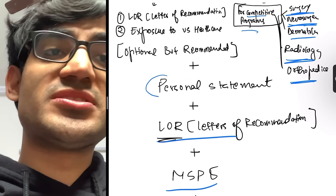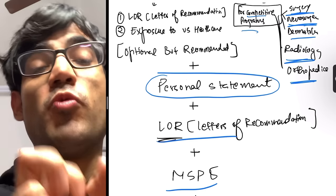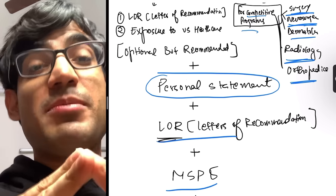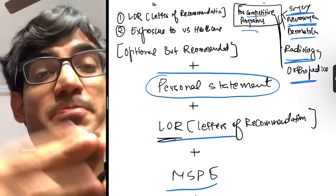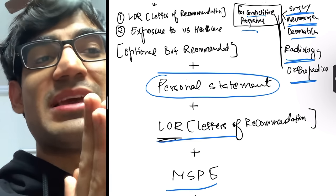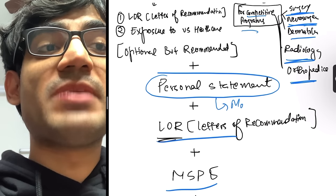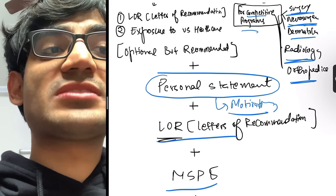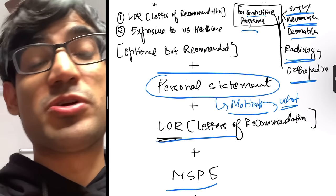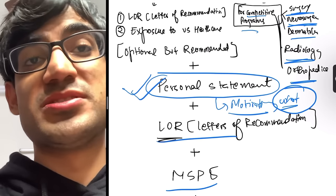The personal statement explains why you want to enter a specific specialty. It covers your life experiences that motivated you toward that specialty, your motivation, and your future aspirations — such as pursuing a fellowship like child and adolescent psychiatry. Programs want to understand what drives you and what you plan to contribute if accepted.